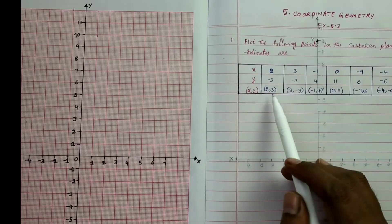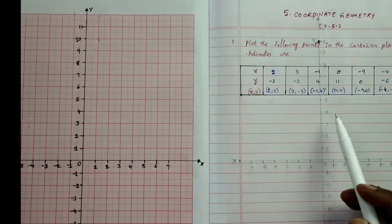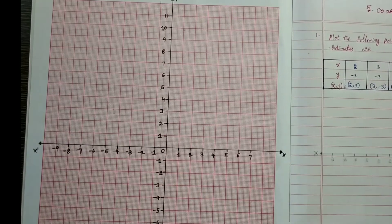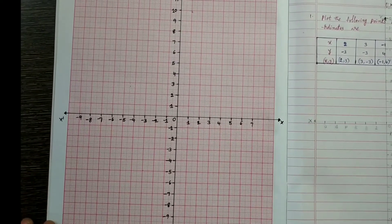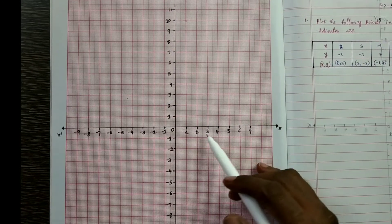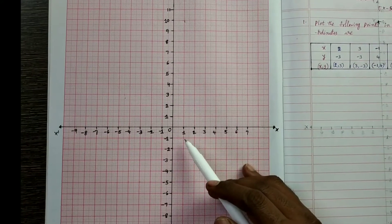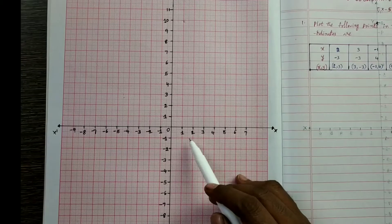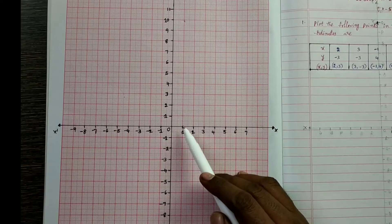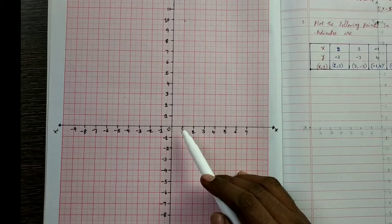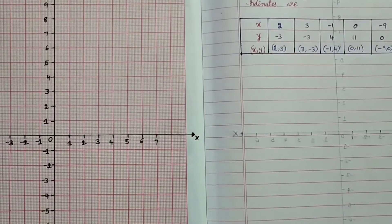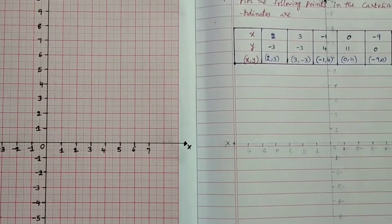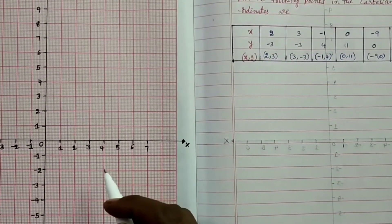Now we have to plot these points on the graph sheet. Take x-axis and y-axis like this. Take 1 cm as 1 unit on the x-axis and 1 cm equal to 1 unit on the y-axis also. The first point is (2, -3).